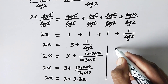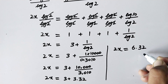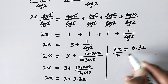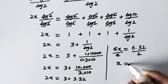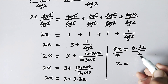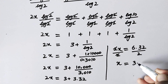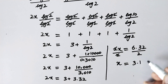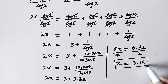Since 2x is equal to 6.32 and we have to find the value of x, we divide both sides by 2. This 2 cancels and x is equal to 6.32 divided by 2, which gives x equal to 3.16. And that is the solution to this problem.